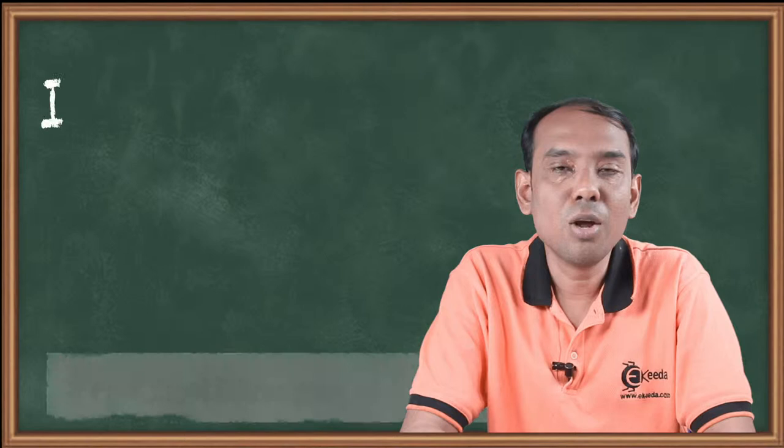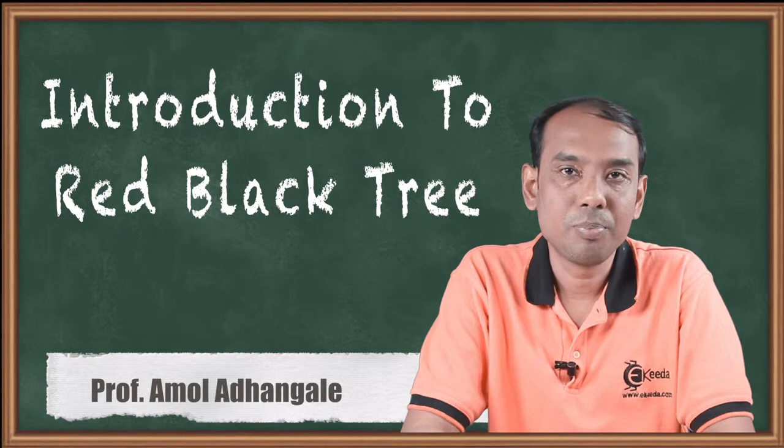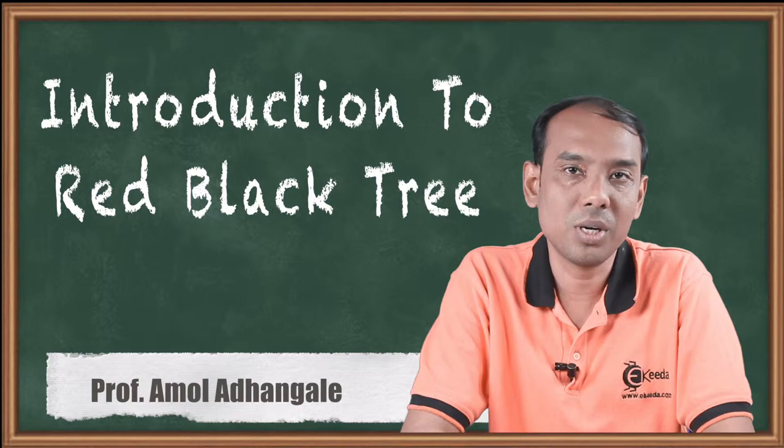Hello friends, today we will look at advanced tree structures, one of which is the red-black tree. A red-black tree is a self-balancing binary tree in which every node has to follow specific properties.